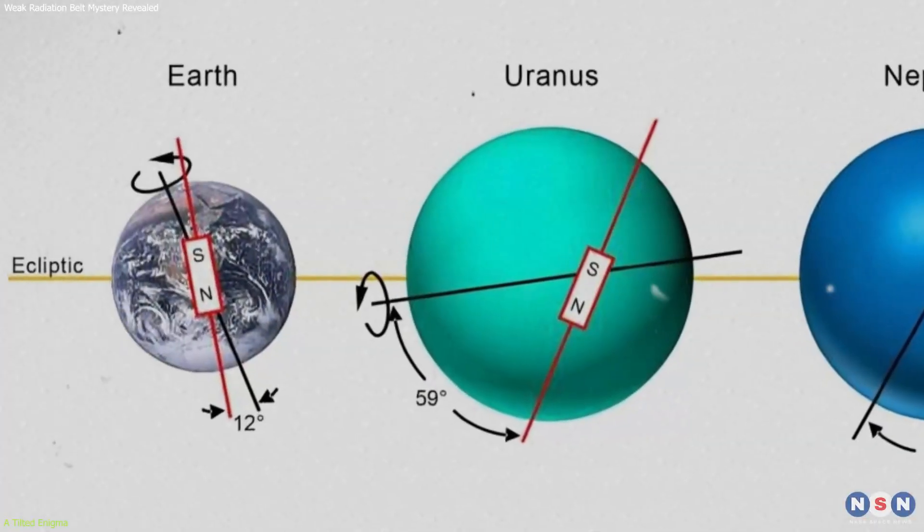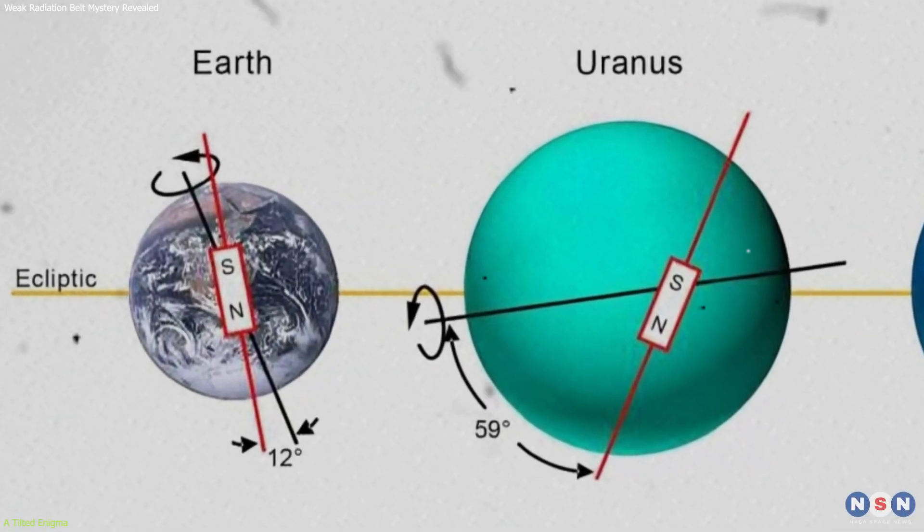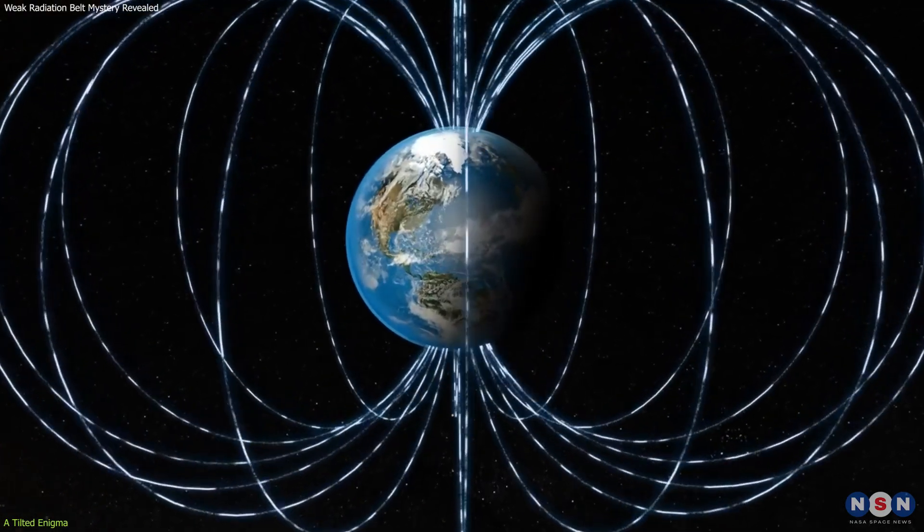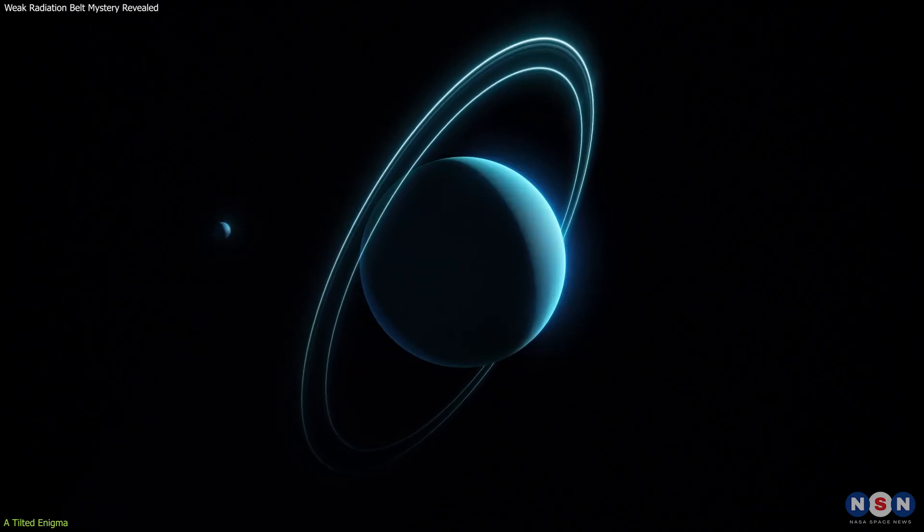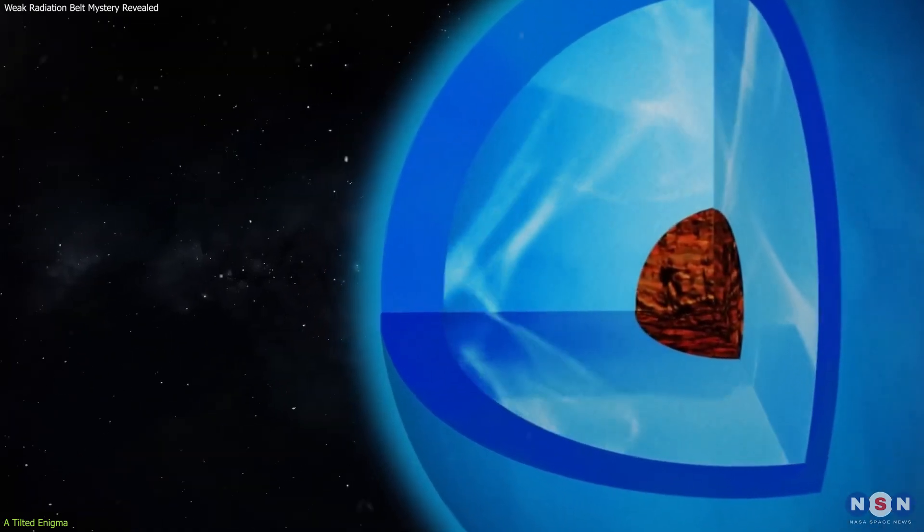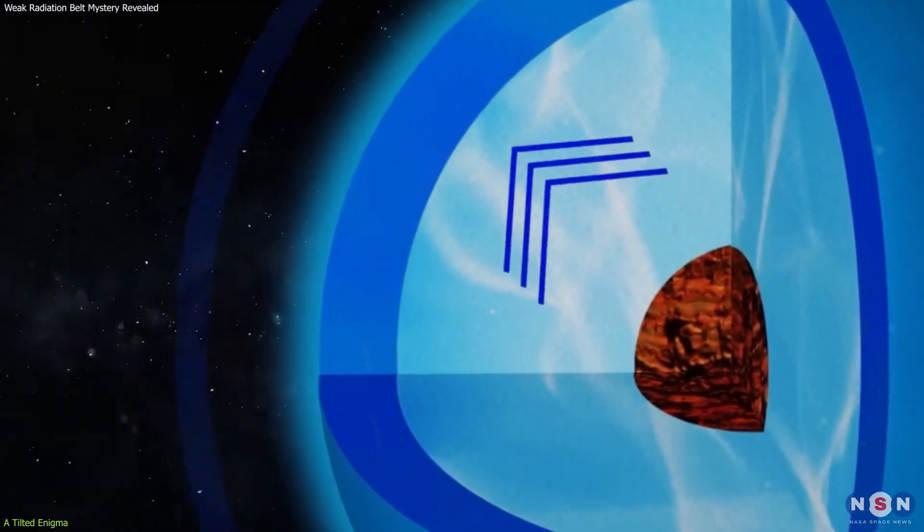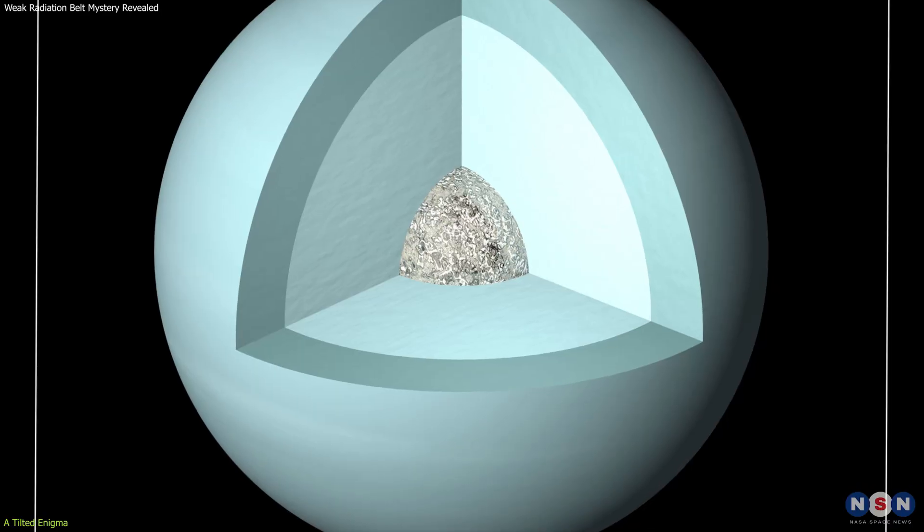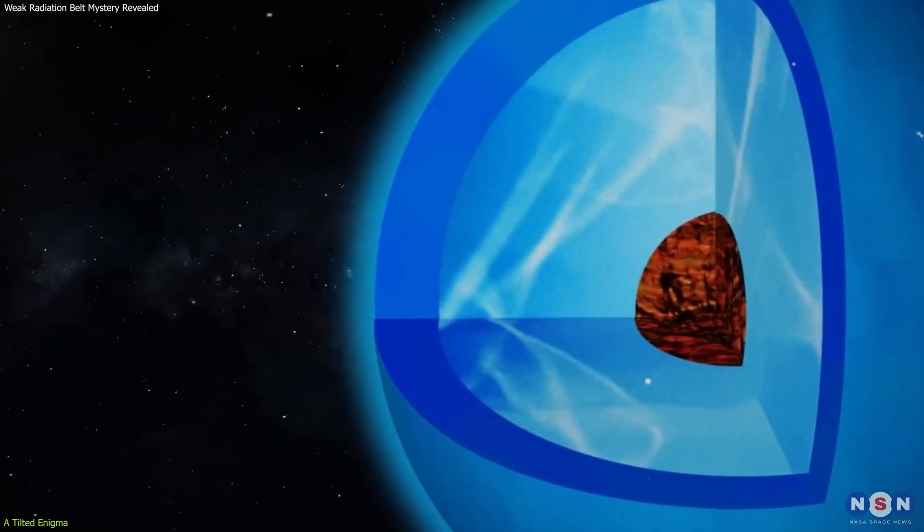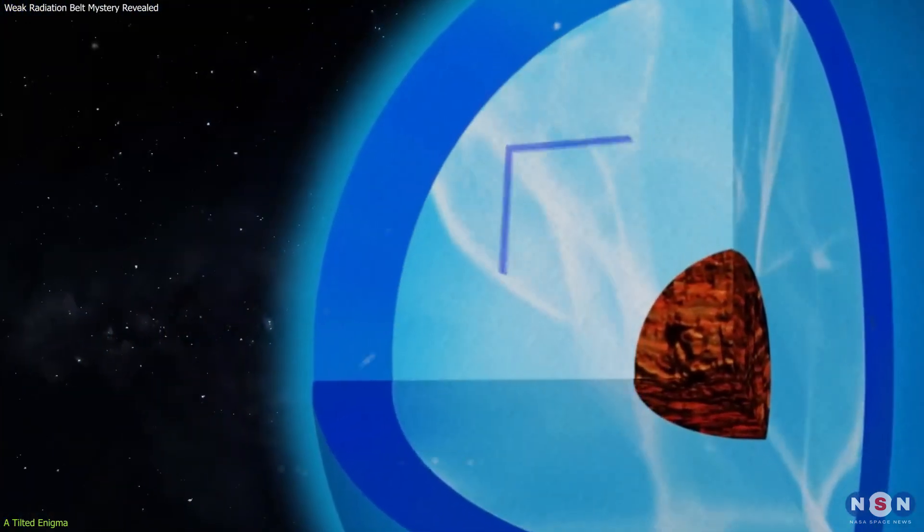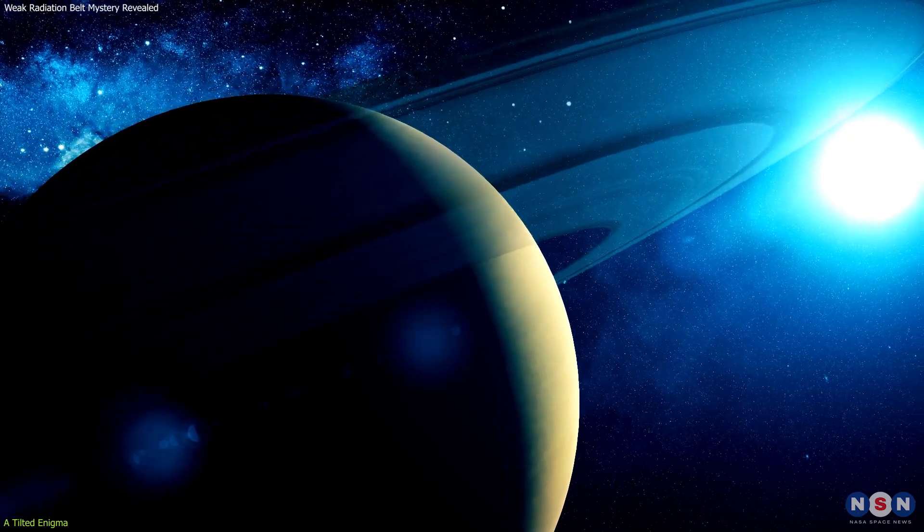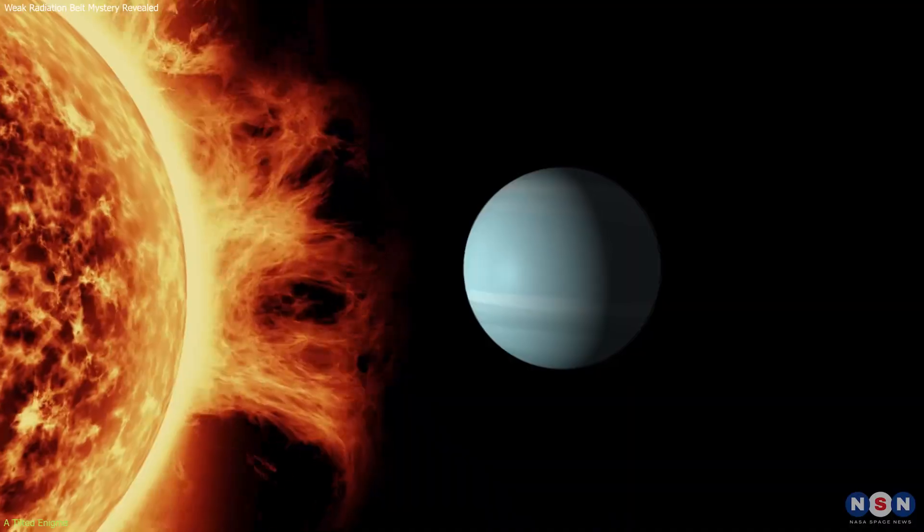Typically, planets like Earth have magnetic fields aligned closely with their rotation axes, which supports a relatively uniform magnetosphere. Its significant axial tilt suggests unusual internal dynamics, possibly involving the movement of electrically conductive fluids deep within its icy mantle. This could be due to an off-center ice rock core, or a thin shell of fluid that's electrically charged, circulating around the core. These peculiar internal movements likely contribute to the planet's unique magnetic setup.